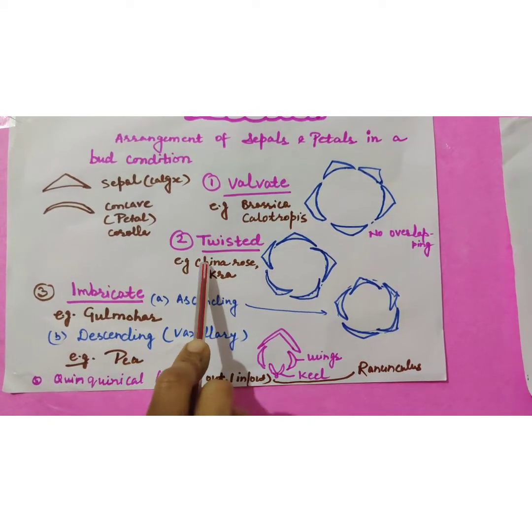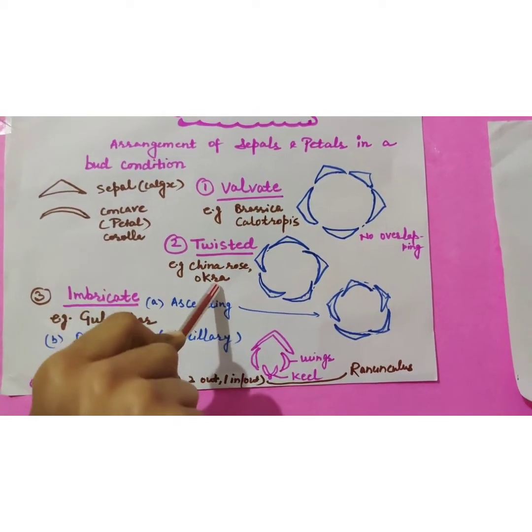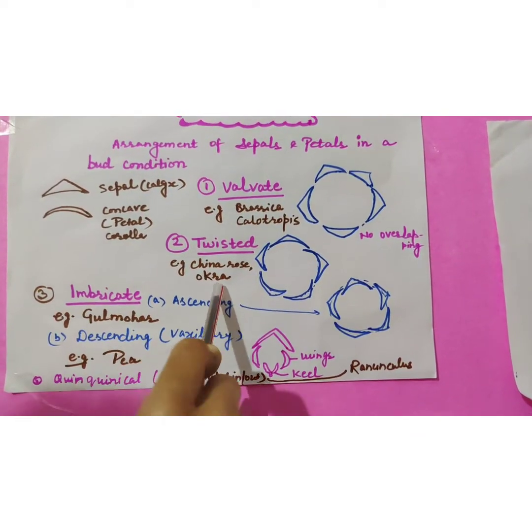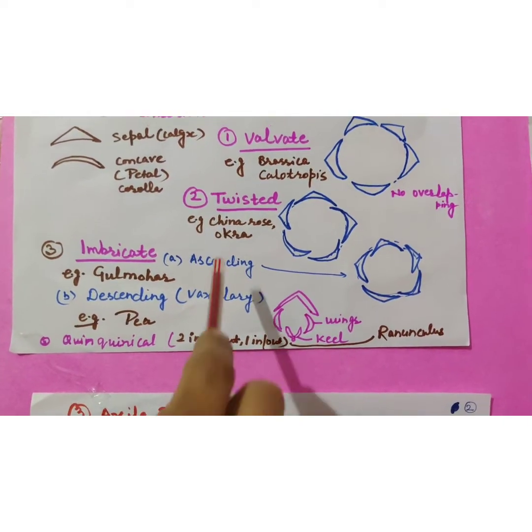Examples are china rose okra that is bhindi. Okra is the name we are using for that, means lady's finger.